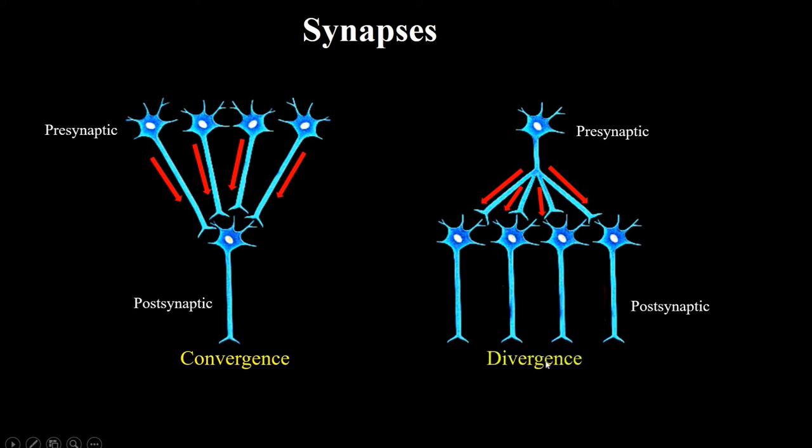The convergence allows information from many sources to influence a single neuron activity, while divergence allows one neuron to affect multiple pathways, multiple neurons.